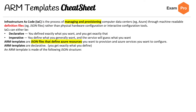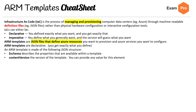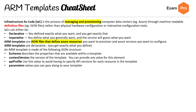An ARM template is made of the following JSON structure, and you should know the structure pretty well because you might see questions where they're showing you that code. Schema describes the properties that are available within a template. Content version is the version of the template. API profile is used to avoid having to specify API versions for each resource in the template. Parameters are values you can pass along to your template. Variables are things you can transform from parameters or resource properties using functions and expressions.